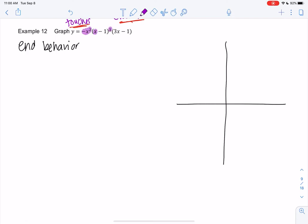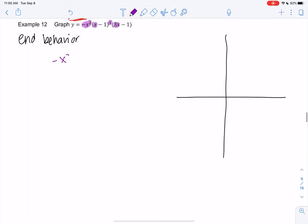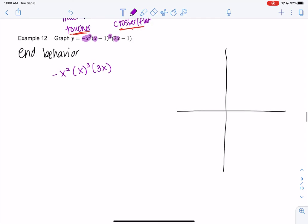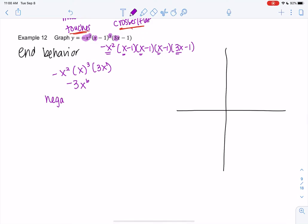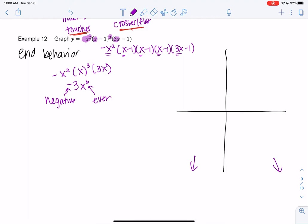So it would be negative x squared would be my first term, times x cubed times 3x. If I were to multiply this out, this would be my leading term. Some of you might see it better if I multiply out the x minus 1 three times, but the first term would be multiplying all the first terms. So this leads me to negative 3x to the sixth. So we have a negative coefficient and an even power. So it's going to be down and down. So the leading term is if I were to multiply this out, what would be my first term?